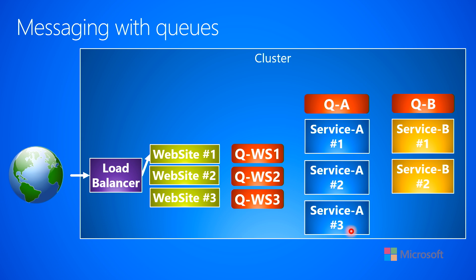Now, what if service A instance three needs to send something off to service B? It can then queue up something into service B's queue. In this case for service B, we have two instances, because maybe that's all we needed for scalability reasons. Those instances also periodically go to QB and ask: do you have a message? Let's say instance number one is the first one to go to QB, looking for a message. QB hands off that message to instance number one, and now instance one starts processing that message.